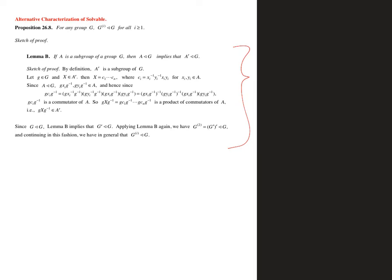There's a cute trick used in the proof where if you've got an element, you can sneak in little products of g inverse and g between other elements — those are just the identity in a creative way. This is another piece of our course where we see using the identity in a creative way as part of our algebra toolkit.